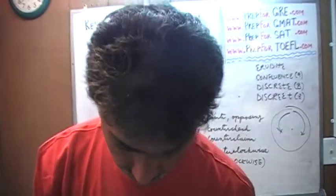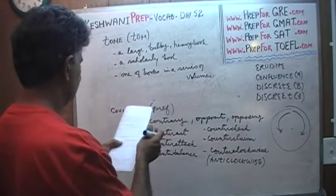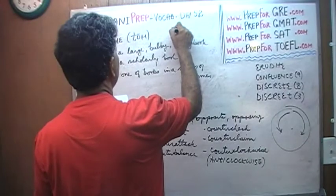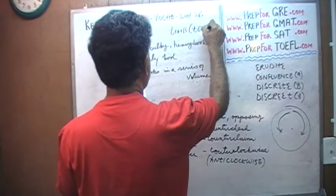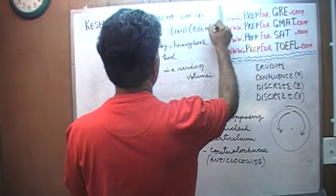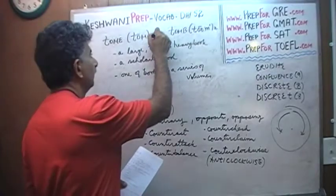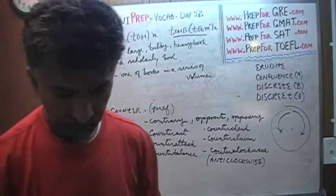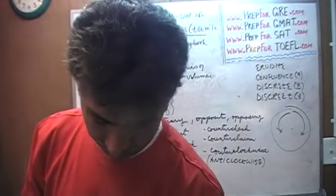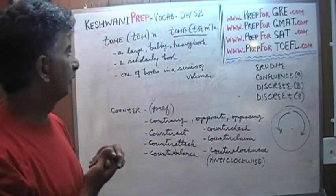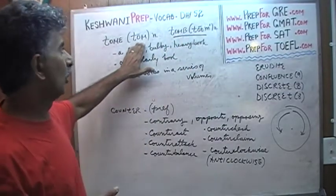Do not confuse the pronunciation of this word — tome — as opposed to 'tomb,' T-O-M-B, where you bury a person. I'm covering this for the benefit of non-native speakers of English. If you are a native speaker you obviously don't need these basic lessons, but for non-native speakers: tome (the book), tomb (where you bury a person) — tome, tome.